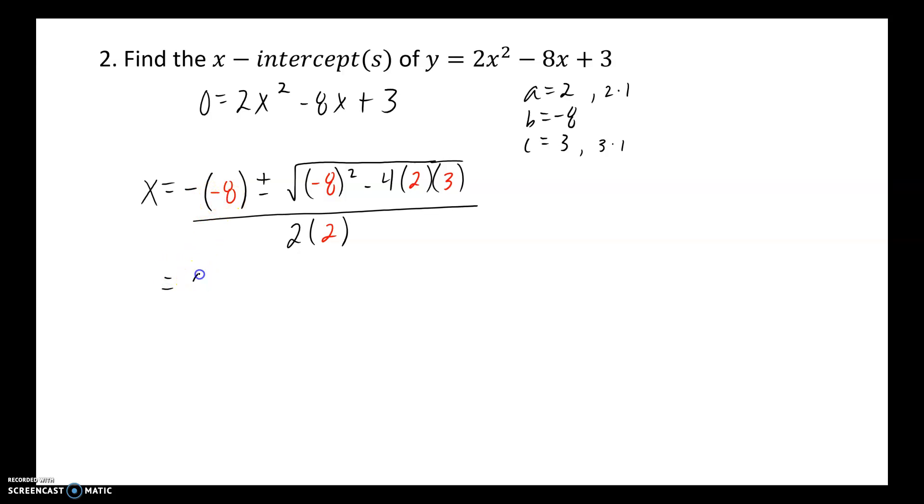The opposite of negative 8 is positive 8. You're going to want to use your calculator, and that's fine, but we've talked about this all year long. If you don't put that negative in a set of parentheses and square it, you'll get negative 64 as an answer. That's not the correct answer though. Negative 8, when I'm multiplying negative 8 by itself, it's going to give me an answer of positive 64. 4 times 2 is 8, times 3 is 24, all over 2 times 2 is 4. So now I'm simplifying as much as possible without the aid of my calculator. 64 minus 24 is 40, all divided by 4.